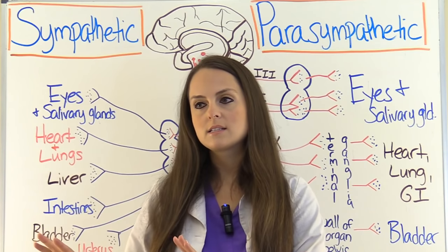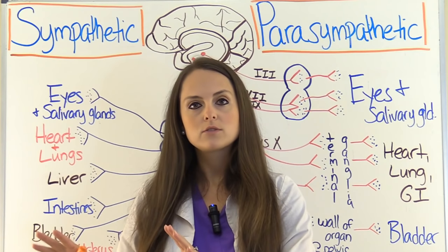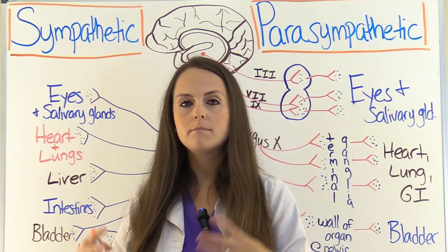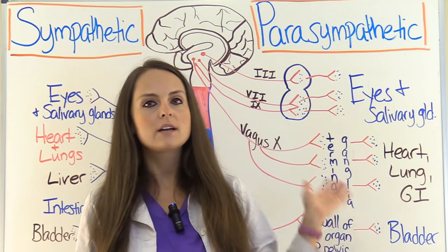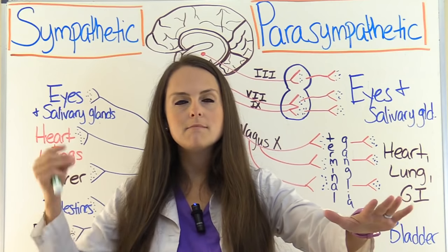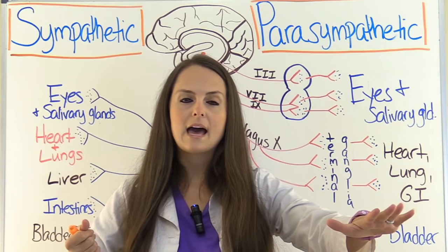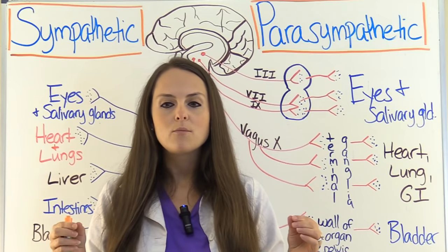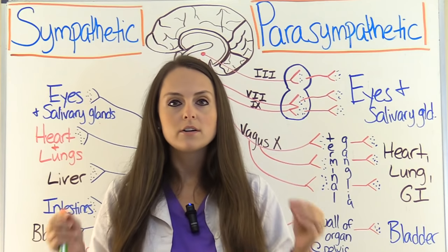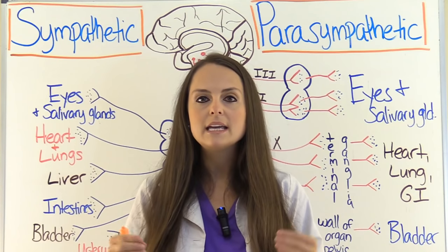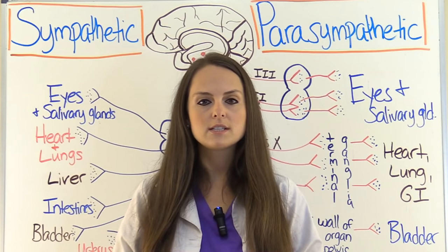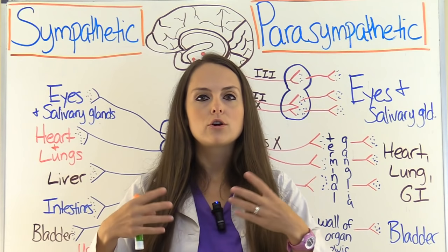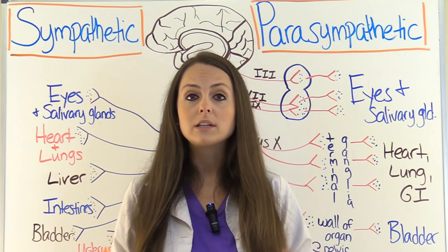The somatic system is responsible for your voluntary actions — for instance, you touch something hot, your body immediately senses that, and you pull your arm off. But with the autonomic system, this controls our involuntary, unconscious things that we really can't control, like our internal organs and how they work, and our glands.